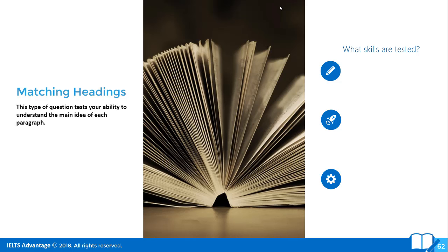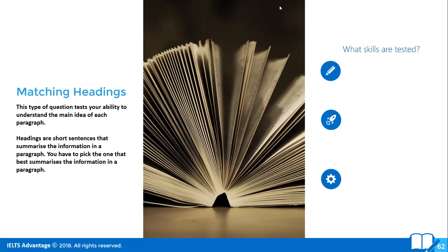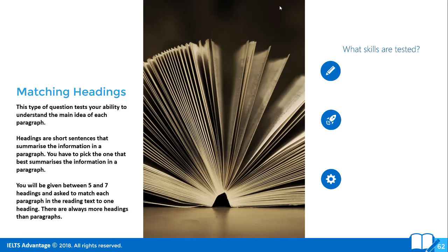This type of question tests your ability to understand the main idea of each paragraph, so it's always important to understand what they are testing. Each question type tests a different sub-skill. One sub-skill being tested is your ability to look quickly at a paragraph and understand the main idea — the key idea in that. Headings are short sentences that summarize the information in a paragraph, and you have to pick the one that best summarizes it. You'll be given between five and seven headings and asked to match each paragraph to one heading. There are always more headings than paragraphs, so they're also testing whether you can tell the difference between them.